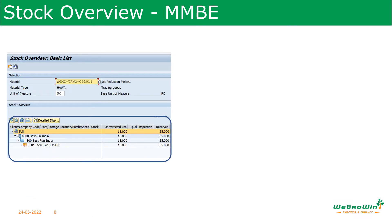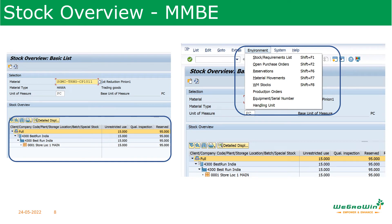After executing the MMBE transaction with selected parameters, the output shows the stock level first at the total company level, then company level, then plant level, then storage location level — giving a complete breakdown. You can see various columns: unrestricted use stock, quality inspection stock, and stock reserved for other order purposes. From the environment tab in the top menu, you can access the stock requirements list, open purchase orders, reservations, and material movements for the specific material — directly from MMBE without opening a separate transaction.